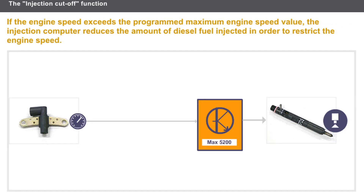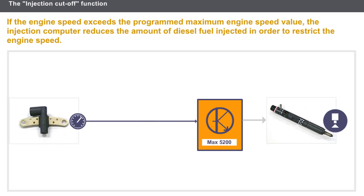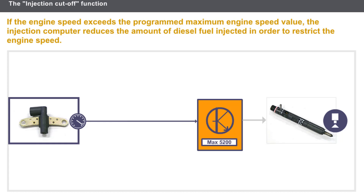In contrast to petrol engines, there is no injection cut-off for engine over-speed protection in diesel engines. The computer receives the engine speed signal from the flywheel sensor. If the engine speed exceeds the programmed maximum engine speed value, the injection computer reduces the amount of diesel fuel injected in order to restrict the engine speed.